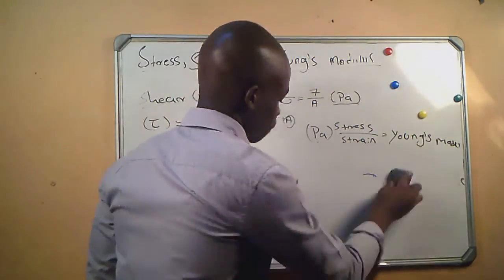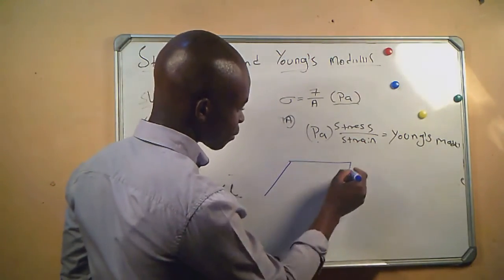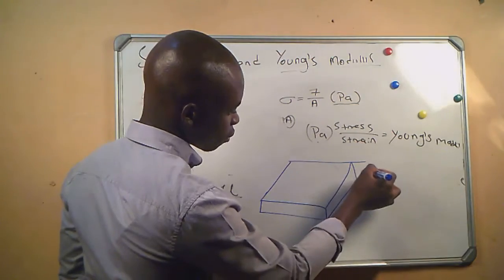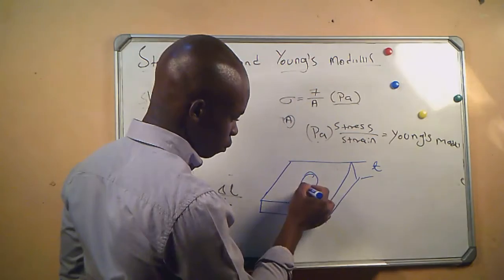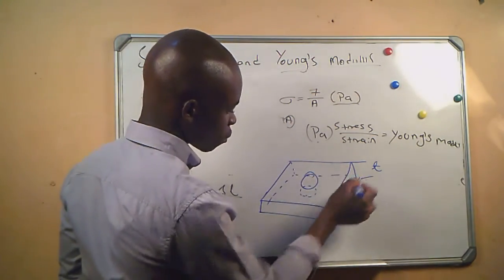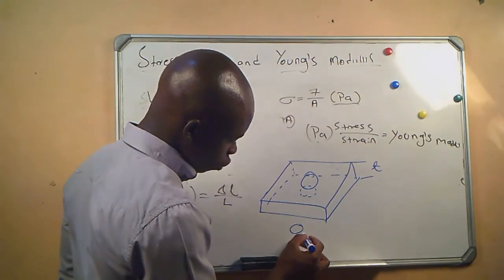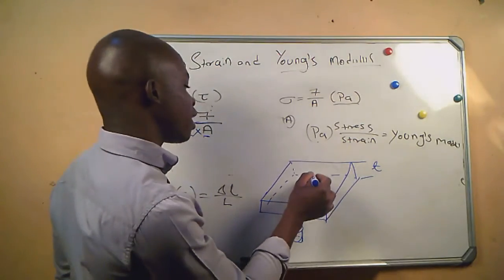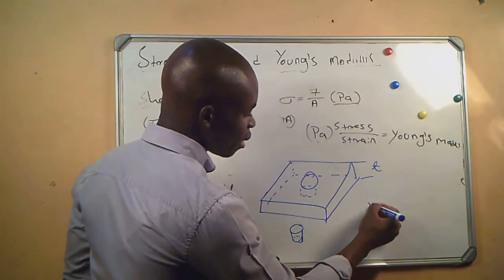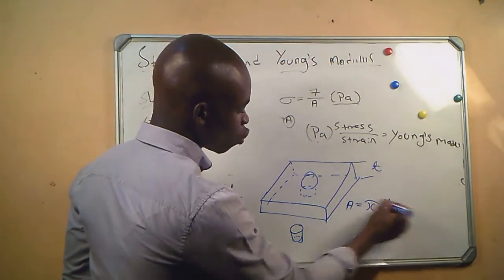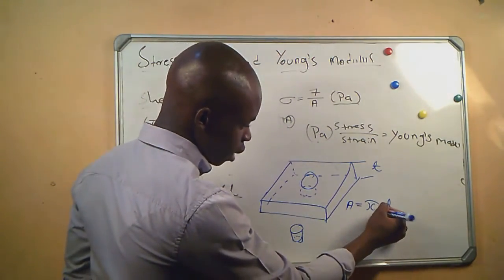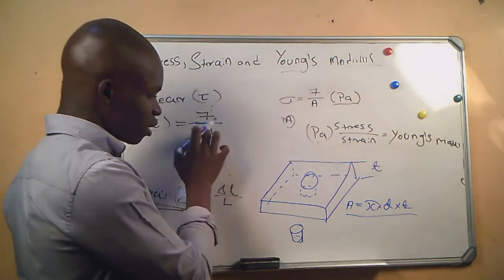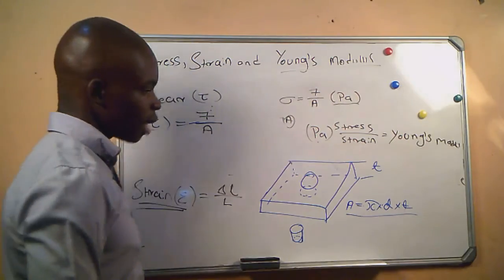Another scenario is a plate of thickness t where we want to drill a hole. A circular piece will come out. When calculating the shear stress, the area is pi times d (the diameter of the hole) times the thickness t, so the area equals pi·d·t.